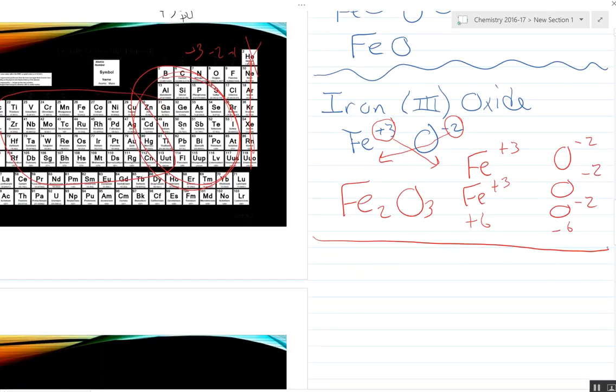Now we'll move to formula to name. And again, it's fairly straightforward. If we had KF, we know that this is potassium, and F is fluorine, which converts to fluoride. Remember, everything always ends in 'ide'.